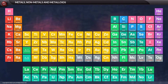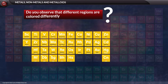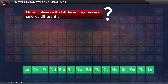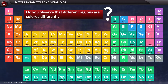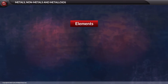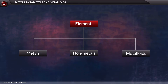Let us look at the periodic table. Do you observe that different regions are colored differently? The different colors refer to the different types of elements. The elements are thus of three types: they are metals, non-metals, and metalloids.